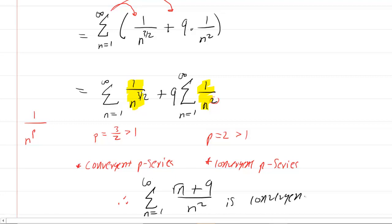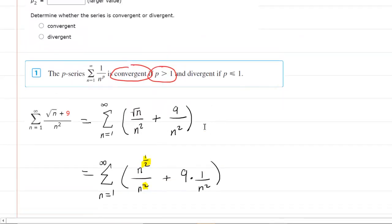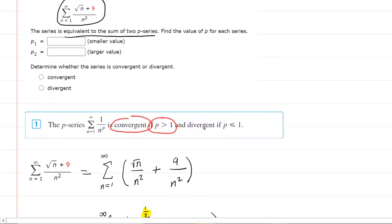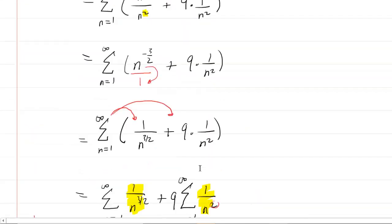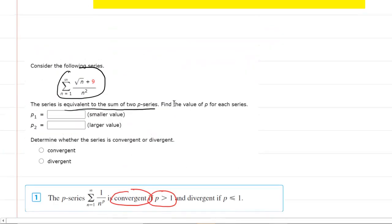Anytime the individual p-series converge, the overall series converges. The smaller value of p was 3/2, the larger value was 2, and the overall series was convergent.